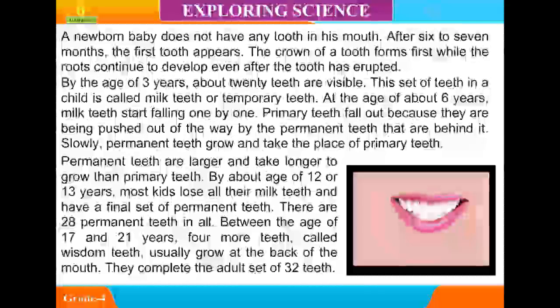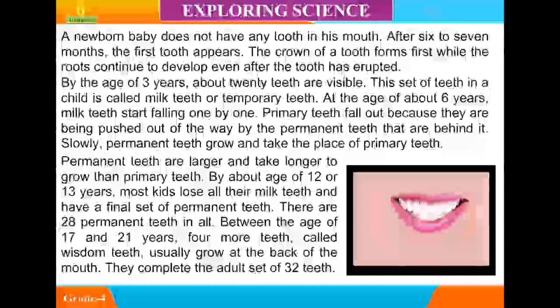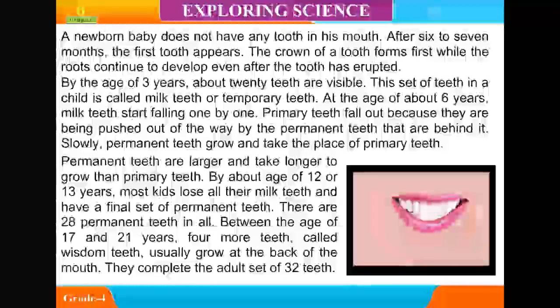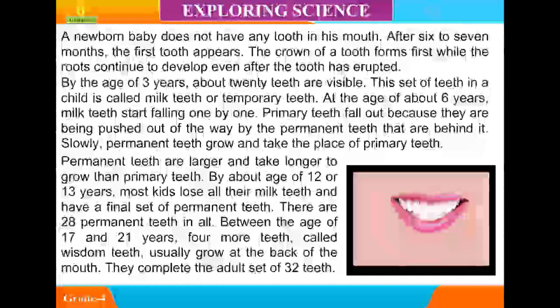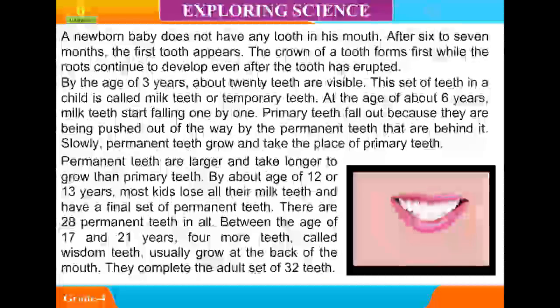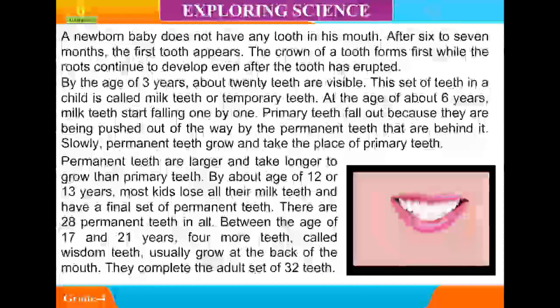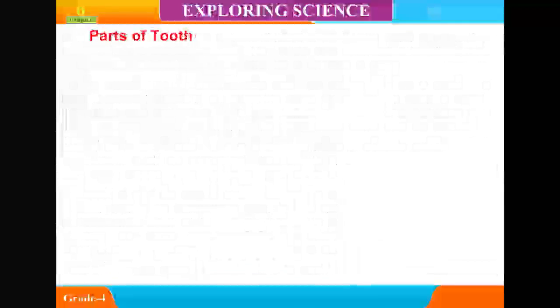There are 28 permanent teeth in all. Between the age of 17 and 21 years, 4 more teeth called wisdom teeth usually grow at the back of the mouth, completing the adult set of 32 teeth.